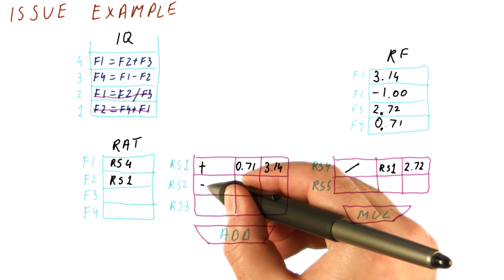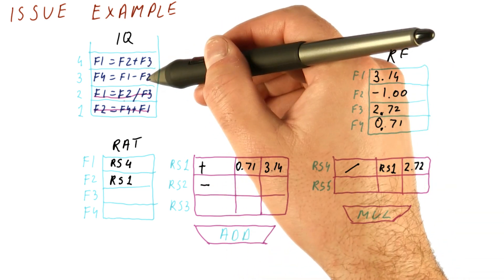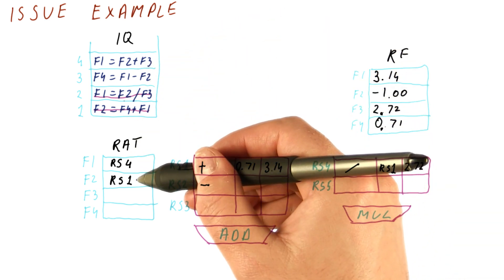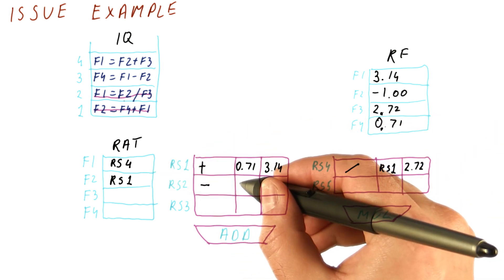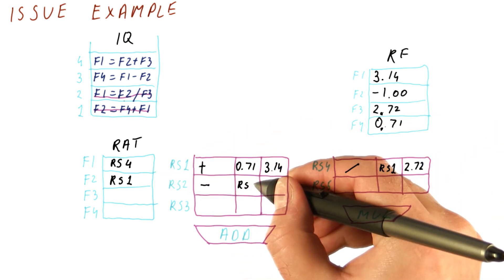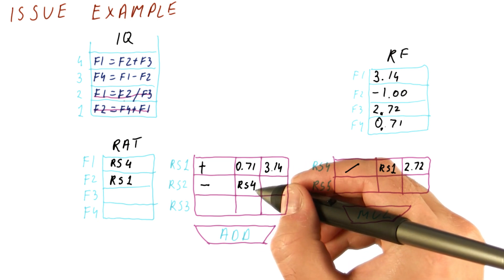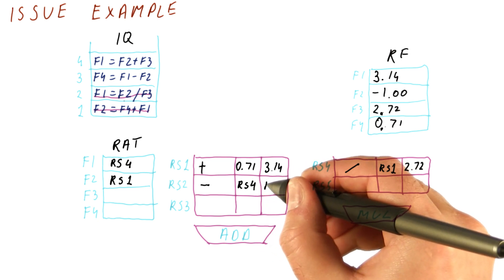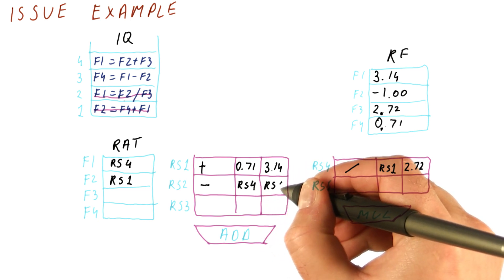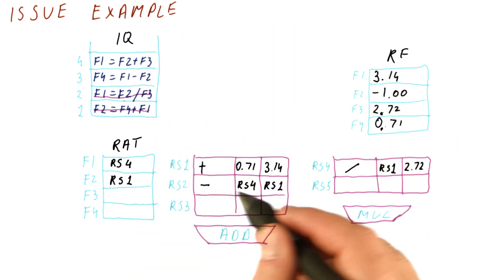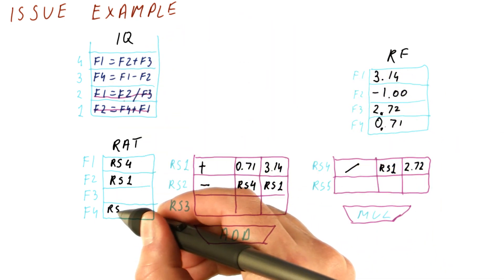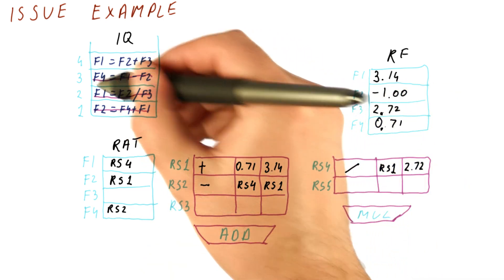It's a subtraction, so it's going to go here. F1 and F2 are the parameters. We see that neither of those two can be read from the register file. So what we're going to do is we're going to mark here that the first parameter is going to be produced by RS4. The second one is going to be produced by RS1. We're going to then mark that F4 is coming from RS2. And we're going to remove this instruction from the issue queue.